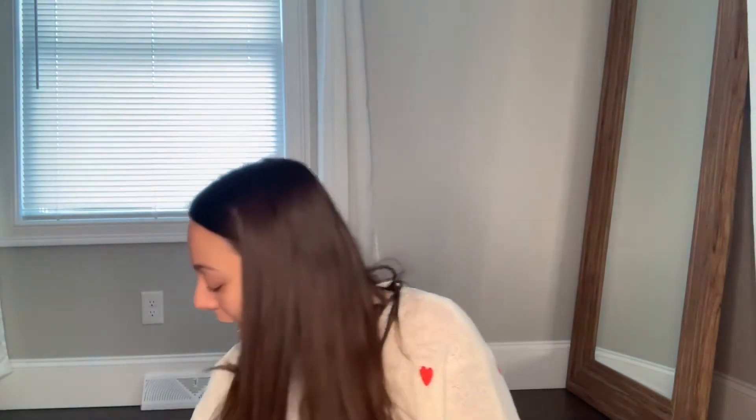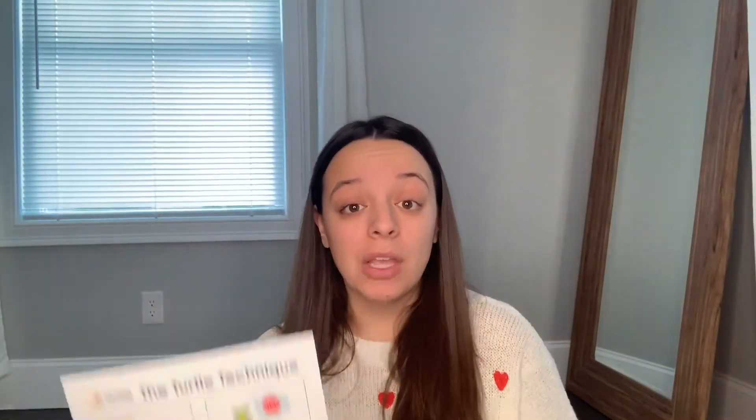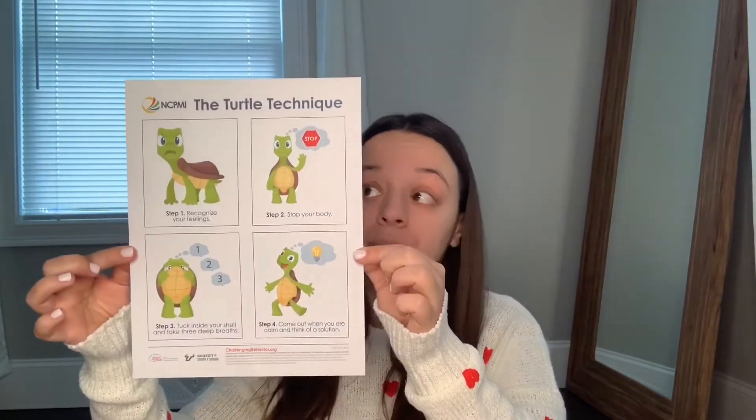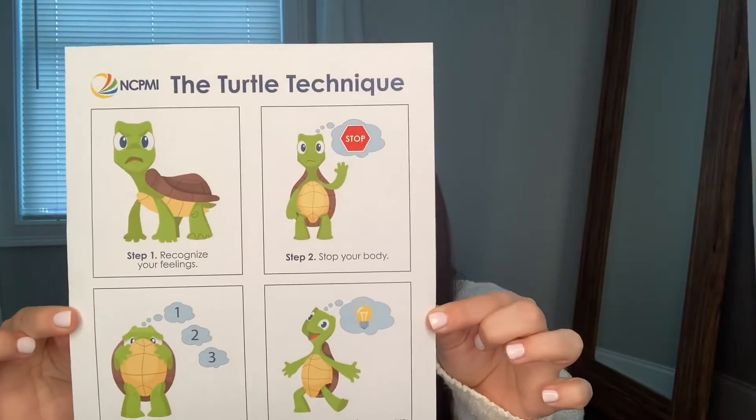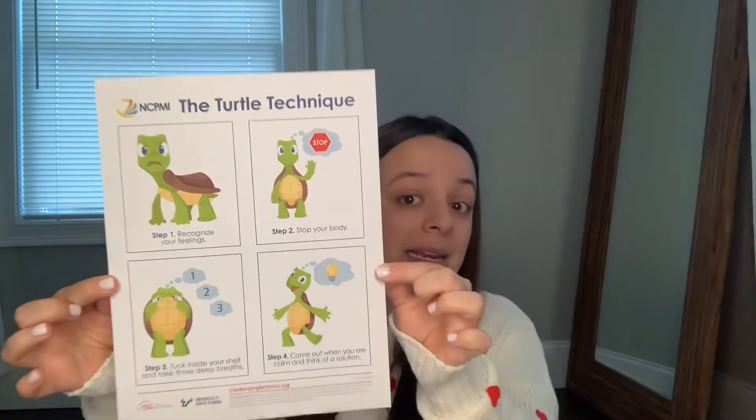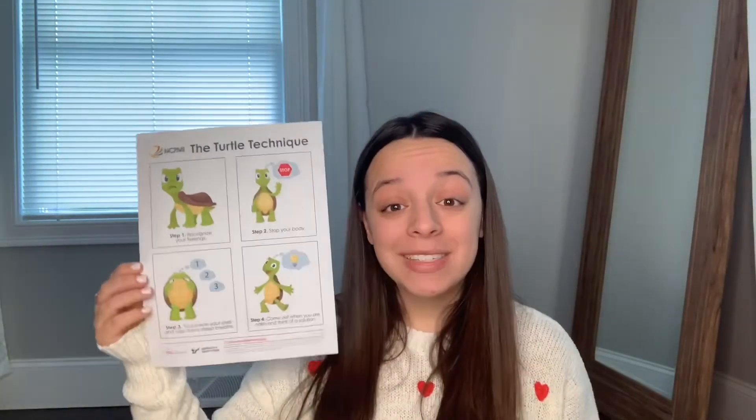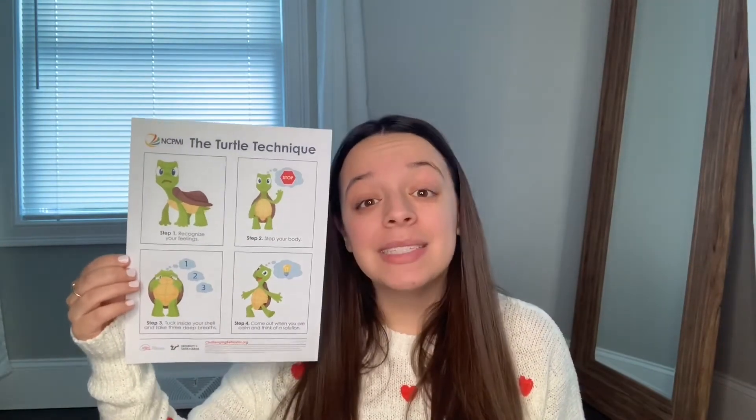After you've read the story and introduced Tucker to them, Tucker has four techniques to help him stay calm. Also on the website, you can print out this sheet — it's called the Tucker Turtle Technique. There are four steps to help calm ourselves down and come up with a solution.